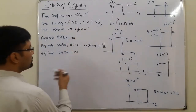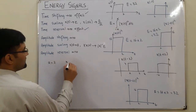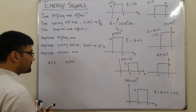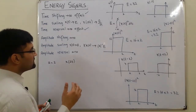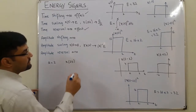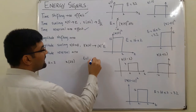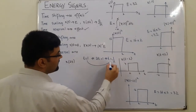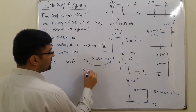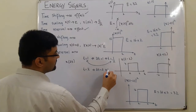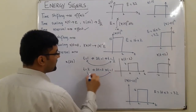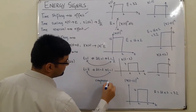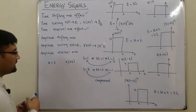Now time scaling. Let's say a = 2, so I have the signal x(2t). For x(2t): originally t = 1 was a point; now 2t = 1 implies t = 1/2. Similarly, originally the point was at t = 2, now 2t = 2 gives t = 1. So the signal has been compressed in the time domain.